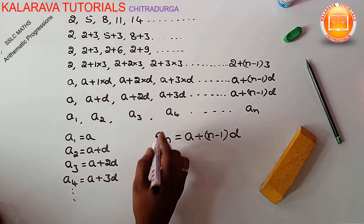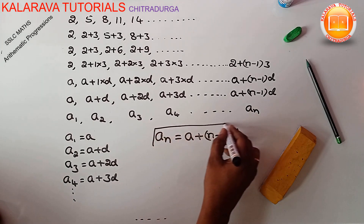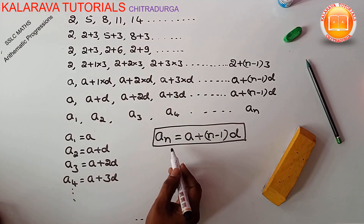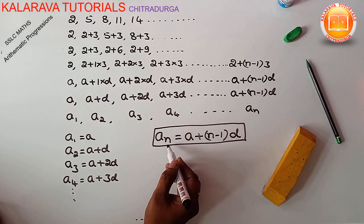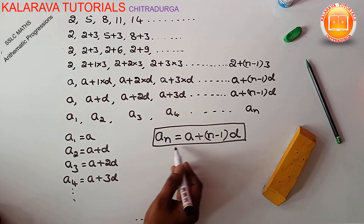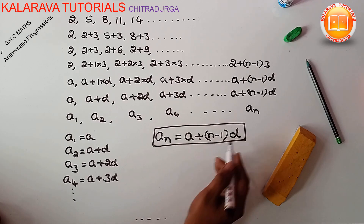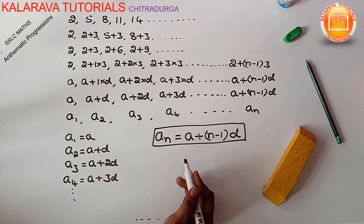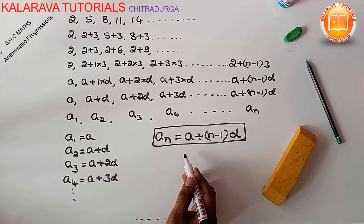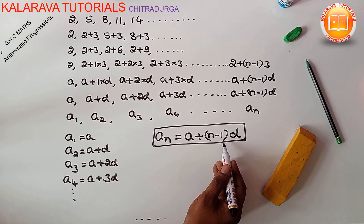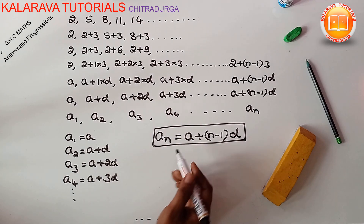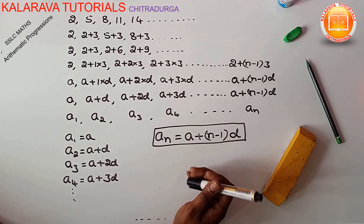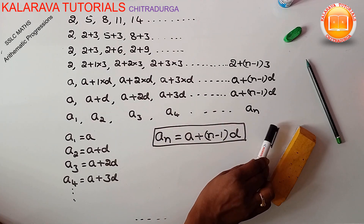So this is the nth term of the arithmetic progression. In an arithmetic progression, we can find any nth term using the formula: an = a + (n minus 1) × d. In the next video we will discuss how to solve problems using this formula. Subscribe to our channel to get the continued video series.